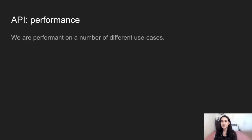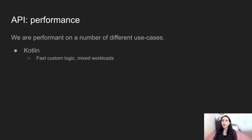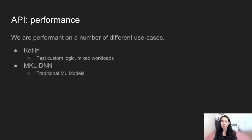Now that we've covered the different pieces of the API, let's talk about performance. We've talked previously about how Kotlin is performant. This is exciting because it allows differentiability to be used in mixed workload applications. So if you're writing a performance-critical application, you can add pieces of differentiation without the cost of having to write logic in Python as you would in other frameworks. For more traditional ML use cases, we've hooked into MKL-DNN, the go-to library for machine learning ops on CPU, and continue to work on C++ speedups.